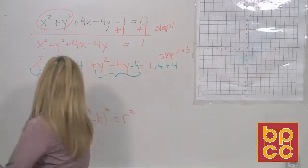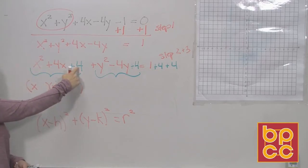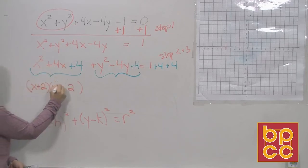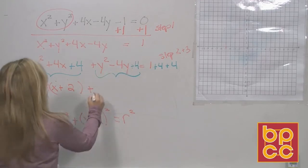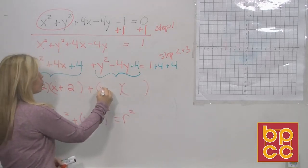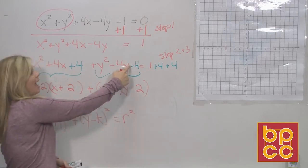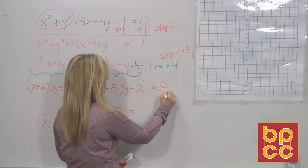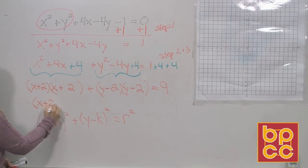Step 4 — once you see a trinomial, it factors. x squared is x times x. What multiplies to 4 and adds to 4? That's 2 and 2. Adding means the signs must be the same; we're adding to a positive, so both are positive: (x + 2)(x + 2). For the y trinomial: y squared is y times y, what multiplies to 4 and adds to 4? That's 2 and 2 — adding to a negative, so both are negative: (y − 2)(y − 2). On the right side, 1 + 4 + 4 = 9. We don't write (x + 2)(x + 2); we write (x + 2)².